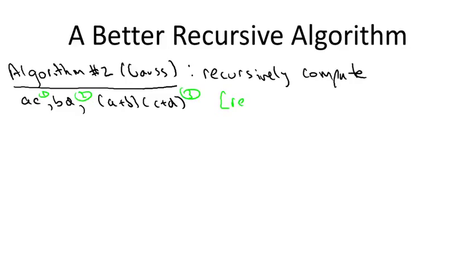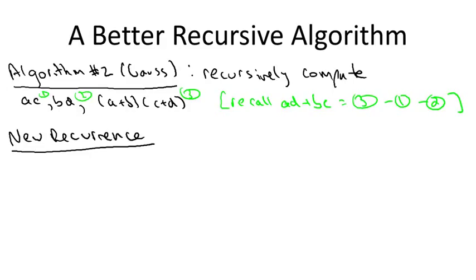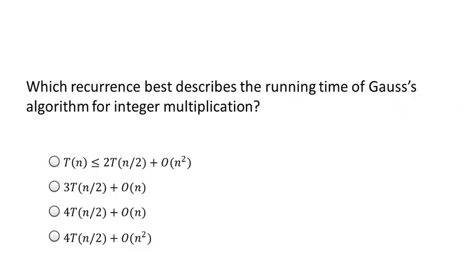that the final quantity that we care about, the coefficient of the ten to the n over two term, namely AD plus BC, is nothing more than the third product minus each of the first two. So that's the new algorithm. What's the new recurrence? The base case obviously is exactly the same as before. So the question then is, how does the general case change? And I'll let you answer this in the following quiz.